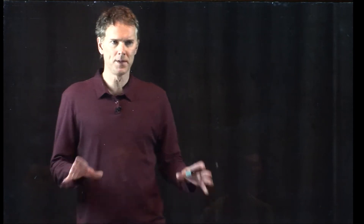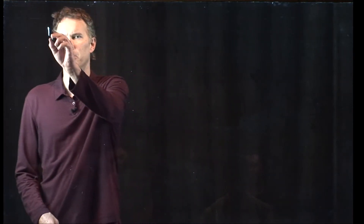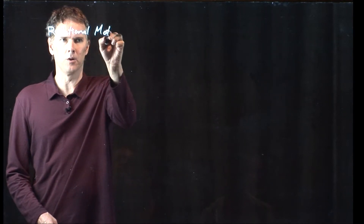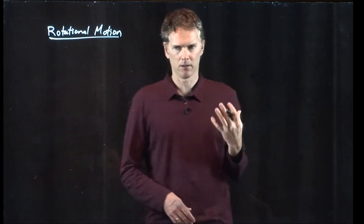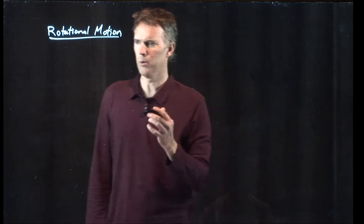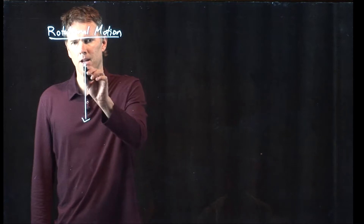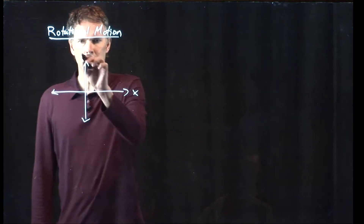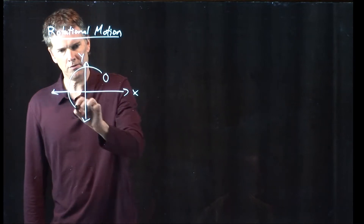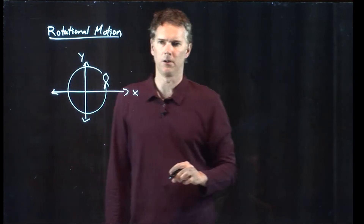Hello class, Professor Anderson here. Let's talk about rotational motion — we're a little bit familiar with this idea already. Let's formalize it a little bit more and convince you that it's maybe not quite as bad as it seems. When we talk about rotational motion, what do we really mean? Well, if we draw an XY coordinate system, rotational motion is just an object moving around in a circle.